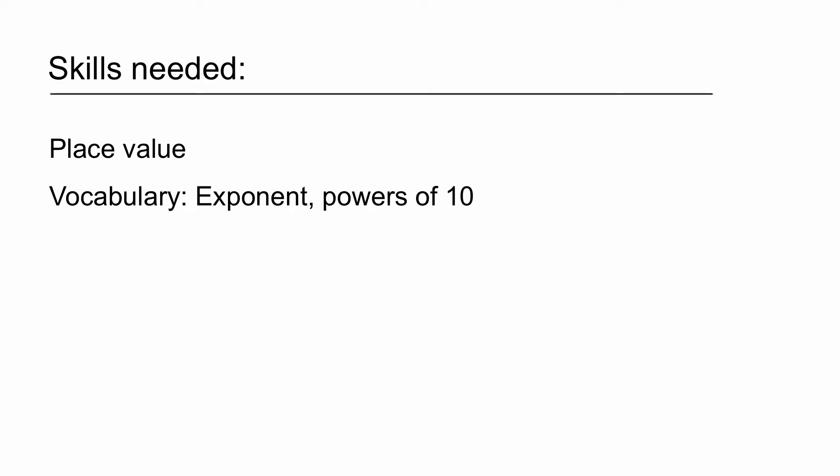Here are the skills you're going to need. You need to know place value — knowing where the tenths or hundredths are. There are also key vocabulary words: exponent, so if I'm talking about an exponent of one, two, or zero, you know which digit I'm referring to. And powers of ten — multiplying by ten, hundred, thousand, one-tenth, one-hundredth, or one-thousandth.